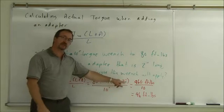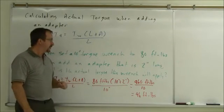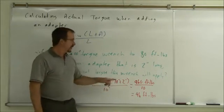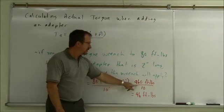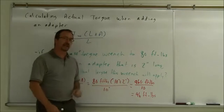Substituting, that's 80 foot-pounds times 10 inches plus 2 inches divided by 10 inches. The instruments calculate out or cancel out. So 80 times 12 is 960 foot-pounds divided by 10 gives us 96 foot-pounds.